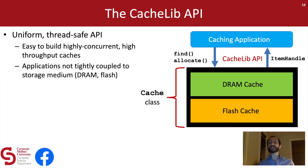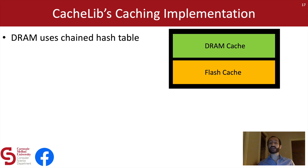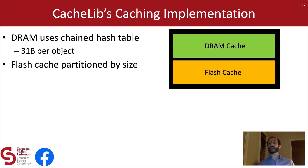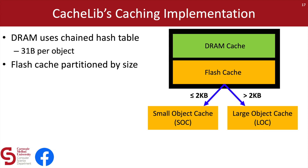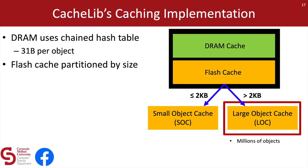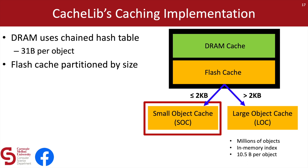By making this API thread-safe, it's easy for programmers to build highly concurrent, high-throughput caches. And by making this API uniform, we decouple the caching application logic from the particular storage medium used for caching. CacheLib's DRAM cache is implemented as a chained hash table, which requires 31 bytes of DRAM overhead per object. To maintain low overhead in the flash cache, we actually partition CacheLib's flash cache into a small object cache and large object cache. The small object cache stores objects smaller than 2 kilobytes, and the large object cache stores objects larger than 2 kilobytes.